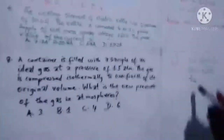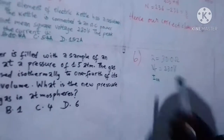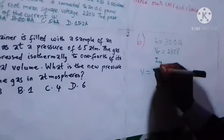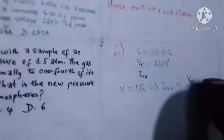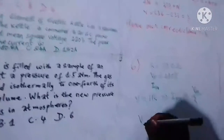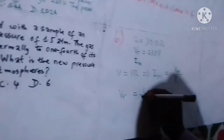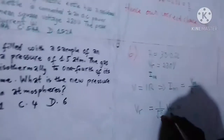We are asked to calculate the peak value of the current, which means we equally need the peak value of the voltage. From Ohm's law, V equals IR, so i-max should equal V-max divided by R, because V is varying but R is not. So we need the maximum value of the voltage. The root mean square voltage equals one over the square root of two times the maximum voltage.